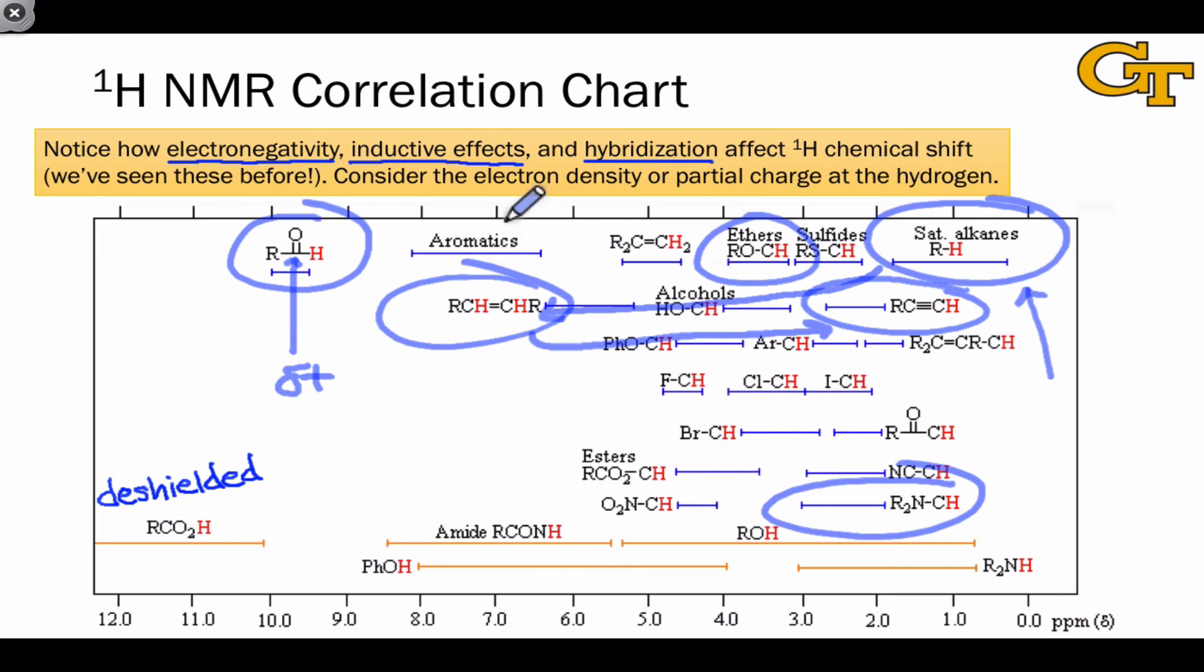For now, the primary punchline is that these three factors—electronegativity, inductive effects, and hybridization—are the big players that determine where a particular type of proton shows up along the chemical shift scale. Although you shouldn't memorize these ranges, you should be able to apply these factors to predict the relative chemical shifts of two different sets of hydrogens within molecules.